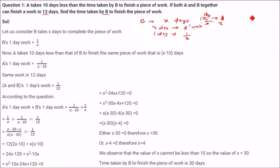If five days' pricing is say $10, then one day's pricing will be $10 divided by 5. This is simply like this only. So B's one day work is 1 by X.